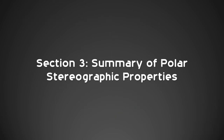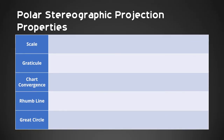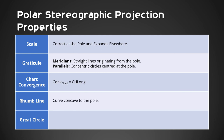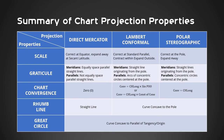Section 3: Summary of polar stereographic properties. Scale is correct at the pole and expands elsewhere. Meridians are straight lines originating from the pole. Parallels are concentric circles centered at the pole. Chart convergence is equal to change of longitude. Rhumb line is a curve concave to the pole. Great circle is a curve concave to the parallel of origin. On the screen is the summary of Mercator, Lambert Conformal, and polar stereographic properties. You can download the PDF copy of this table using the link in the description.